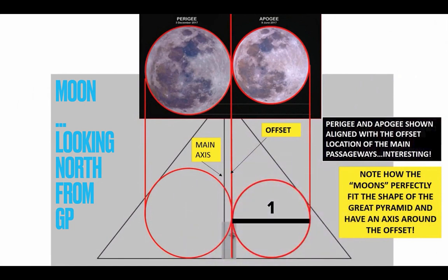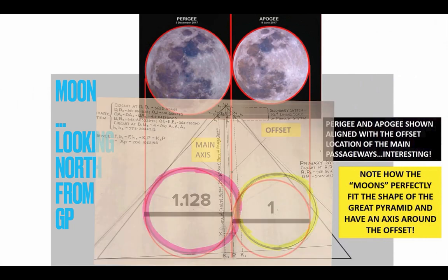Looking on the south side looking north — if you take one diameter to be apogee, then it's 1.128 at perigee. They both join together at that offset entrance. It's offset to the other side because we're looking on the south side of the pyramid down to the north. You can see that apogee and perigee define that original entrance.